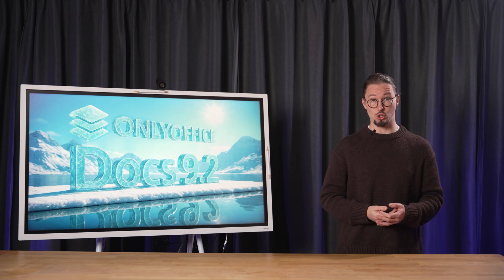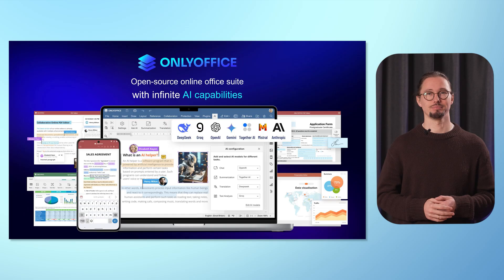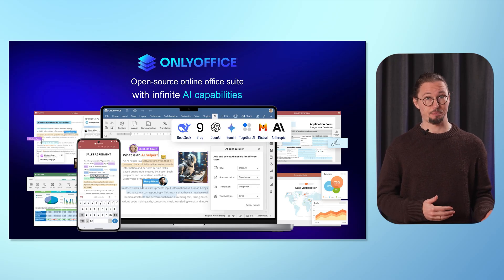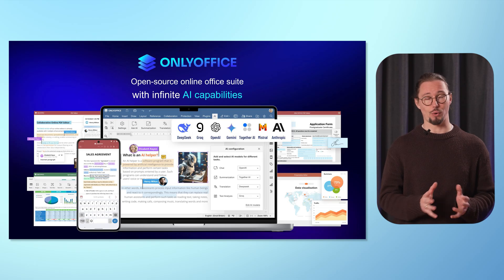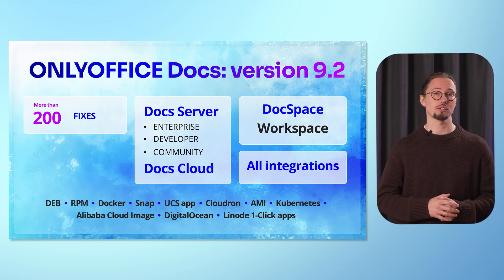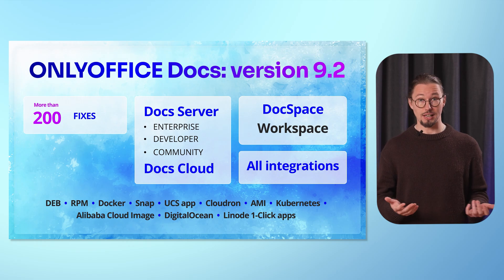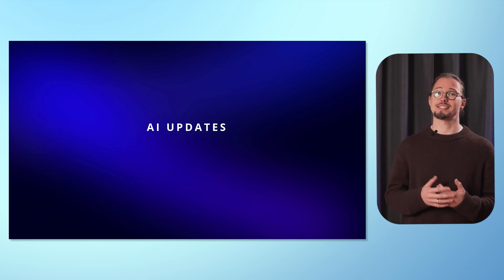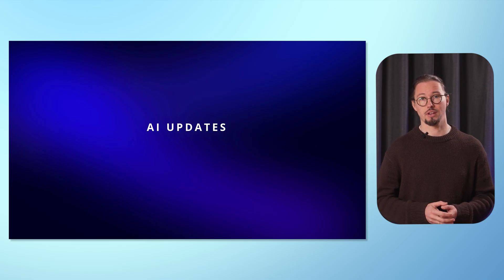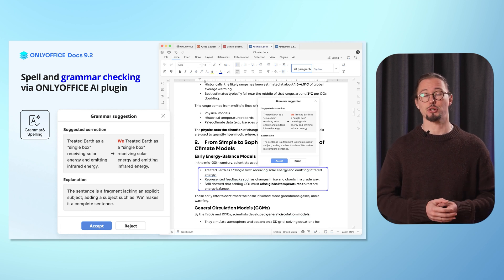The updated OnlyOffice DocSpace also features the latest version 9.2 of the editors. OnlyOffice Docs is a powerful and versatile suite for text documents, spreadsheets, presentations, forms and PDFs. It's accessible across all major platforms, including web, desktop and mobile, ensuring seamless productivity wherever you work. The latest update, version 9.2, comes with over 200 fixes and enhancements. The cloud version is already live with self-hosted builds coming soon. The newest release of OnlyOffice Docs introduces exciting AI-powered updates to enhance your workflow, including spell and grammar checking directly through the OnlyOffice AI plugin, ensuring polished and professional documents every time.